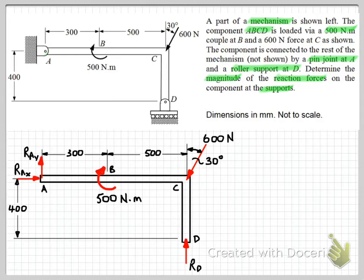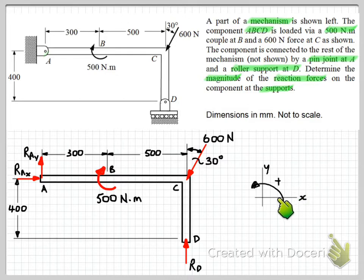Now having used components X and Y, we should define what they are. So on our diagram: X direction positive to the right, Y positive upwards, and for moments anti-clockwise positive. Now that we have our free body diagram, we can go and apply the equations of equilibrium.